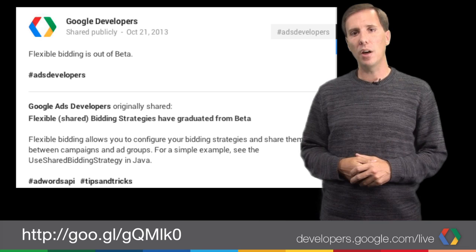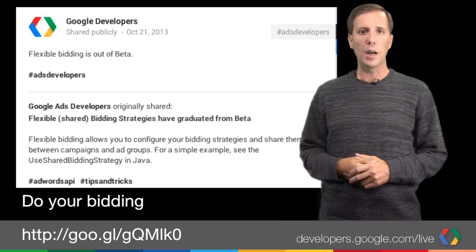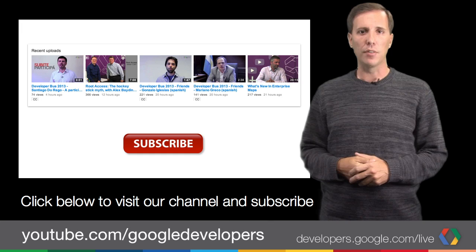Also, for AdWords API users, we announced that flexible bidding strategies have now graduated from beta. This feature enables you to set up your bidding strategies and share them among campaigns and ad groups. You can also learn more on the AdWords API documentation on developers.google.com.